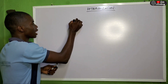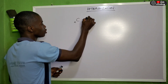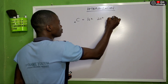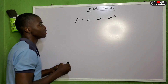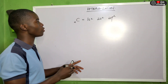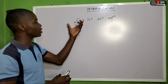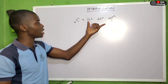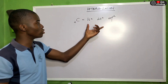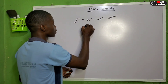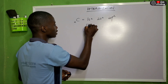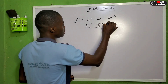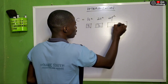Carbon atom has the electronic configuration of 1s2, 2s2, and 2p2. This is the ground state electronic configuration of carbon, which can also be drawn with degenerate orbitals — px and py.